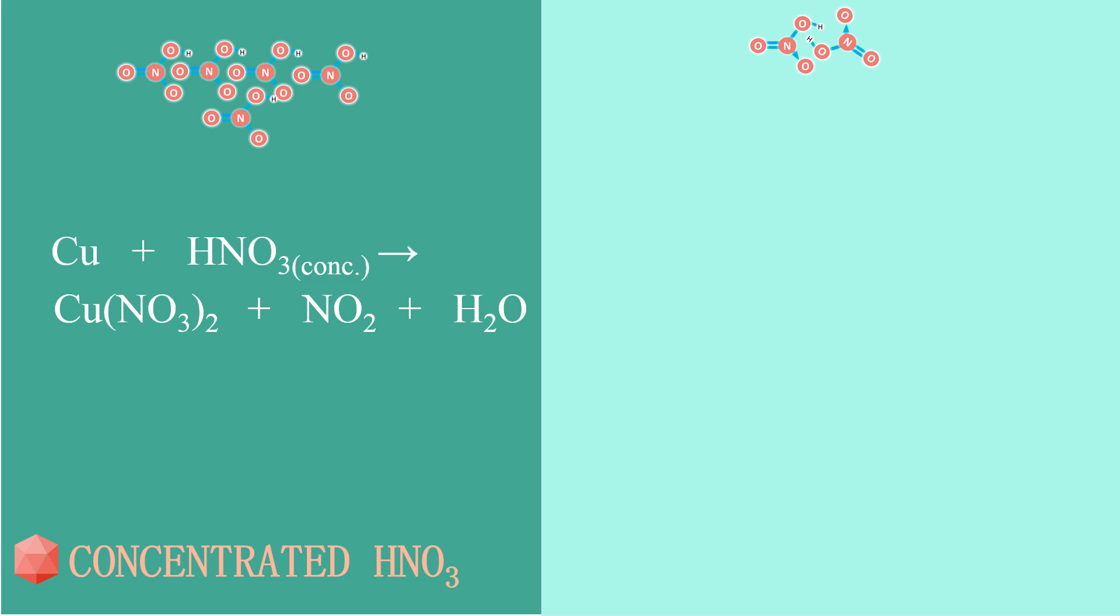From the video, we've seen a blue solution and a dark brown gas released. The solution is copper nitrate and the gas is nitrogen dioxide. So, we can conclude that when copper reacts with concentrated nitric acid, the reaction produces copper nitrate and nitrogen dioxide.